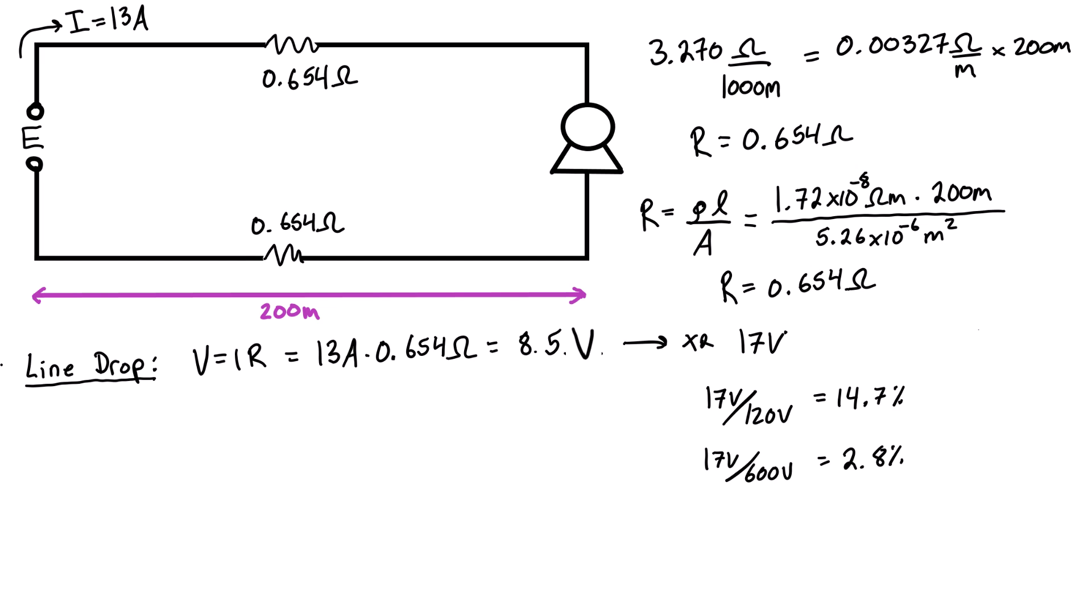That's line drop—17 volts of line drop. Now we want to talk about line loss, and loss is always referring to power. So drop refers to voltage, loss refers to power. We're talking about how much power we're losing due to this resistance in our lines. We're just going to simply use one of our power formulas—in this case it's just going to be I squared R. You might hear about people talking about I squared R losses, and that's exactly what this is—it's the power loss due to the current and the resistance.